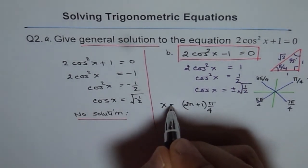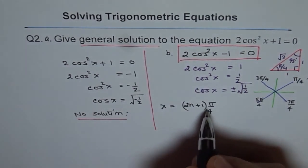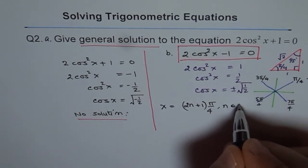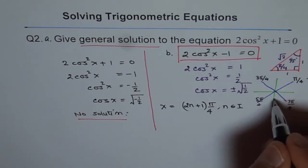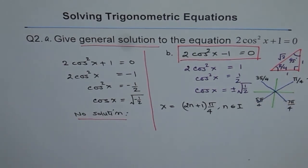And I say, my x should be equals to 2n plus 1 pi by 4, where n belongs to integers. And could be negative. Remember, we could go like this also, negative, getting the same answers.